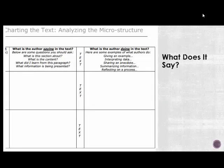The chart that you're going to use looks like this: what does the author say and what does the author do? So you break it up by paragraph, so paragraph one through three. What is the author actually saying here? So you start to ask yourself some questions.